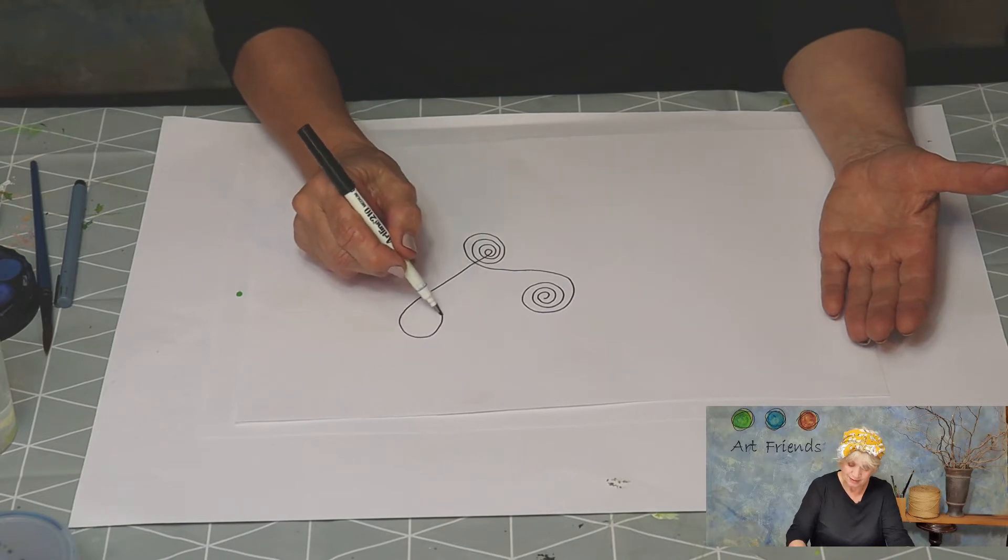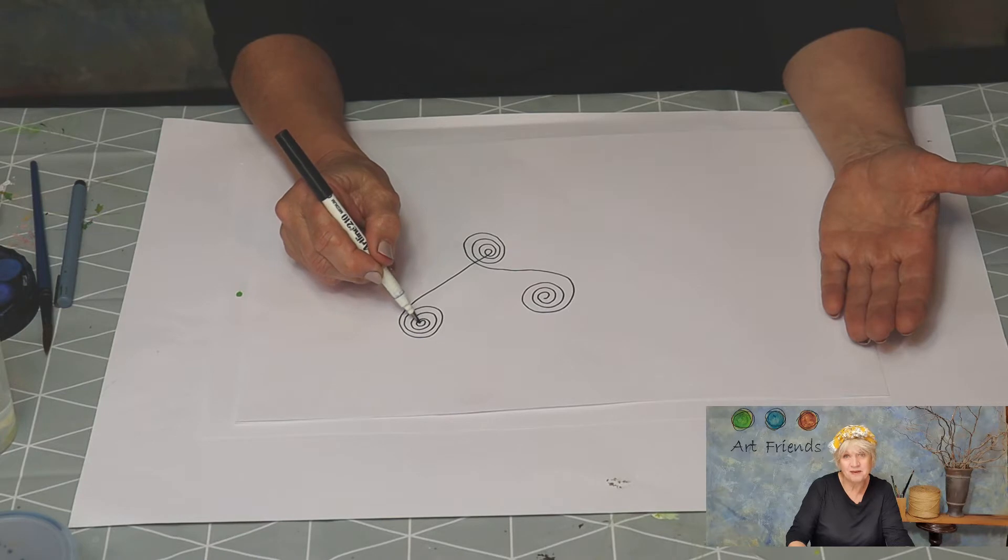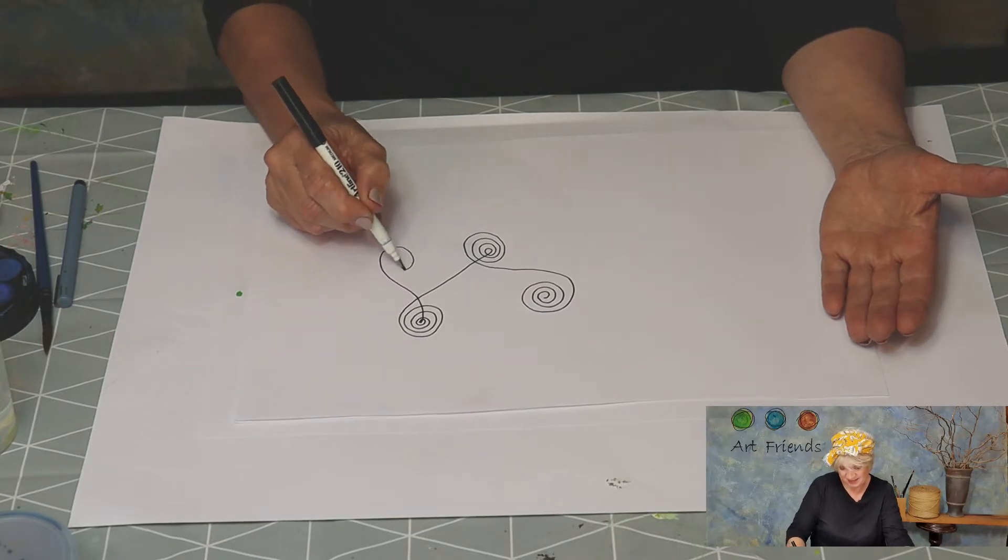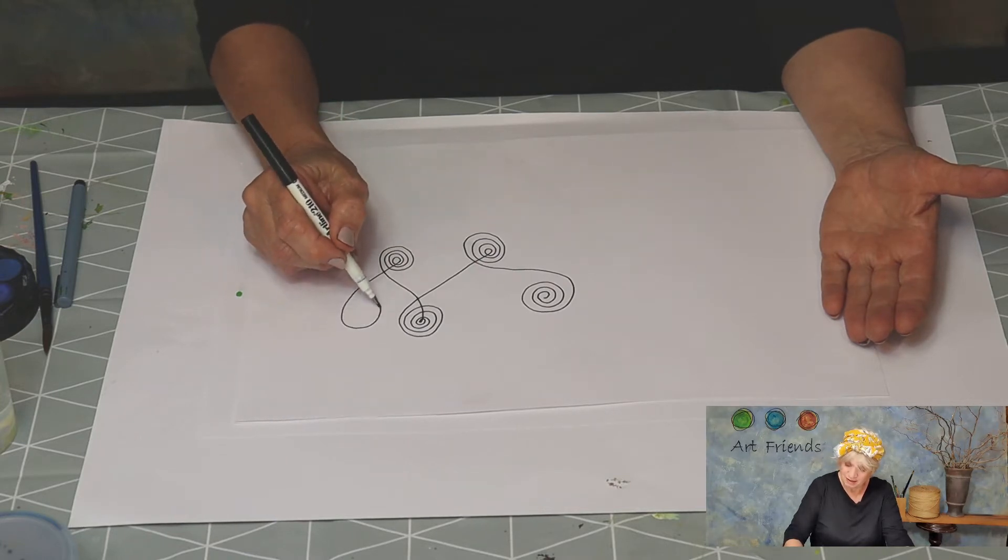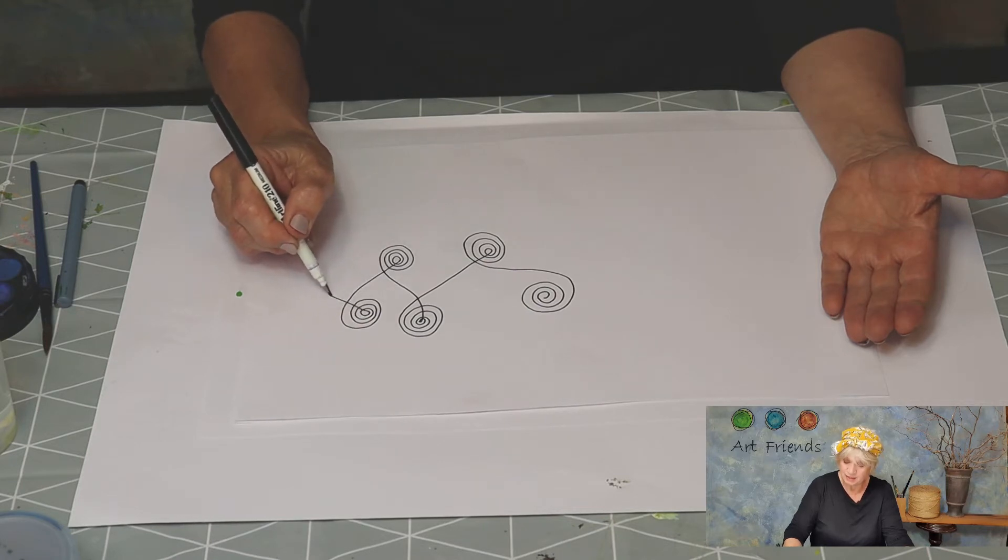And another. They can be big, they can be little, whatever. Don't overthink it too much, just enjoy that flow of finding a space and doing a spiral.